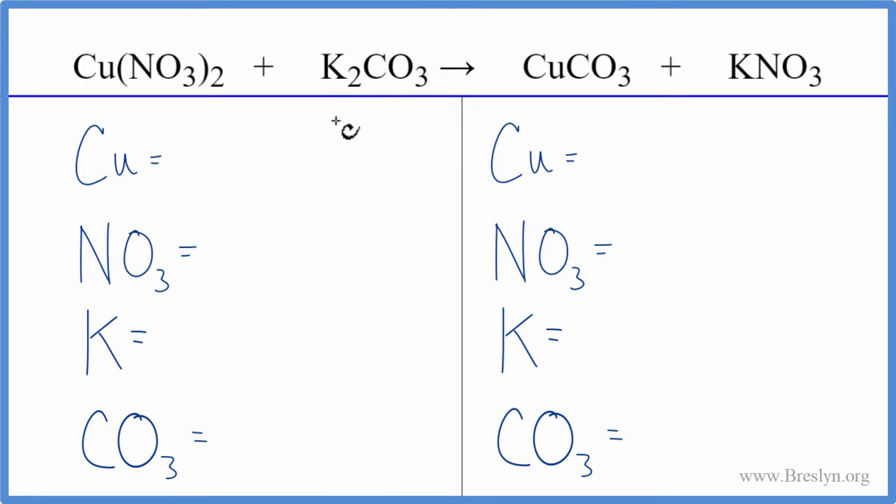We're going to use a bit of a trick here for this double displacement reaction. We have these polyatomic ions like the nitrate. We have it here and here. It stays together, so we're going to count it as just one thing. That'll make the balancing a lot easier.